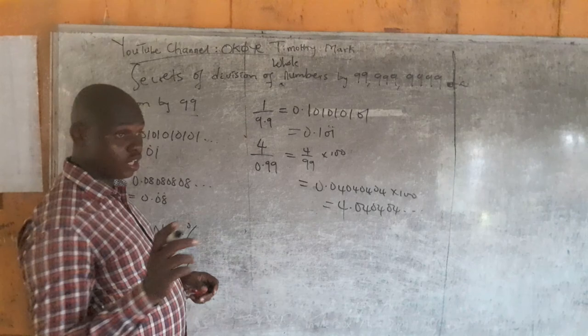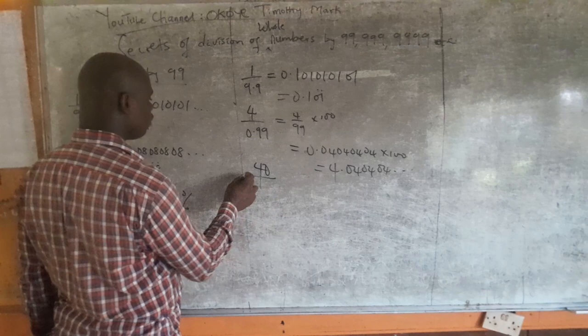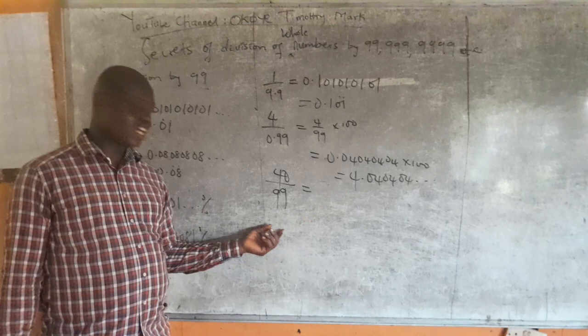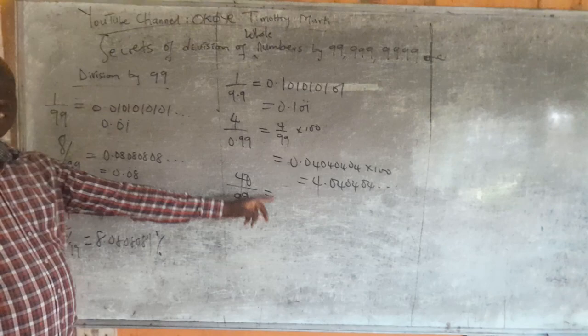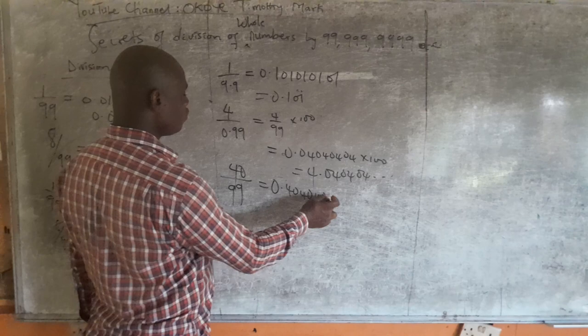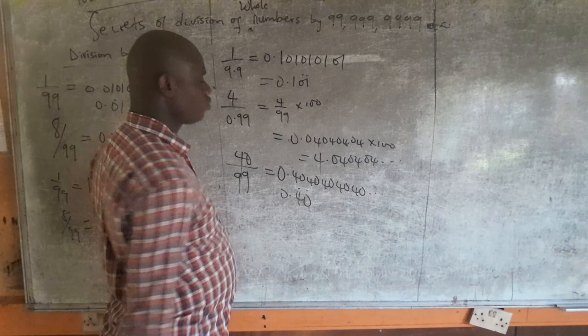So that is the secret of division by 99 for a one-digit whole number. Now if a two-digit whole number that is less than 99 is divided by 99, just know that the answer is 0. followed by the two-digit whole number repeated indefinitely. For instance, 40 over 99 is 0.404040..., which is written as 0.40 repeating.